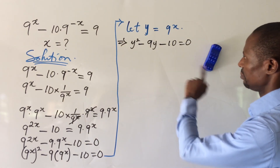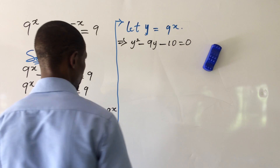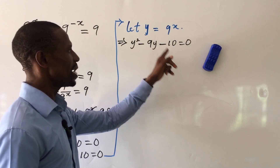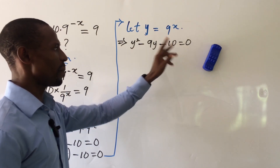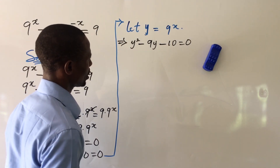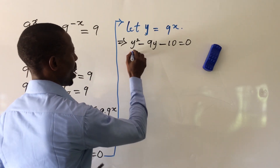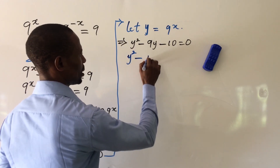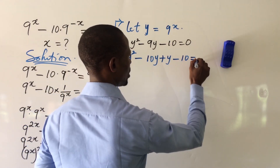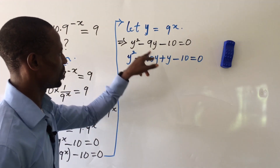We'll solve this quadratic using the factorization method. We need two numbers from the factors of 10 that when added give minus 9 and when multiplied give minus 10. Those two numbers are minus 10 and plus 1. So we rewrite as y squared minus 10y plus y minus 10, all equal to zero.